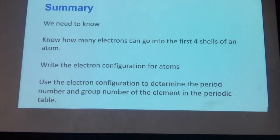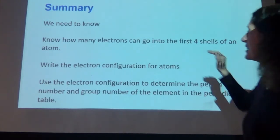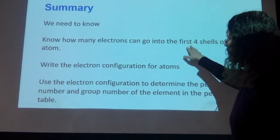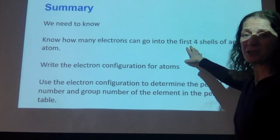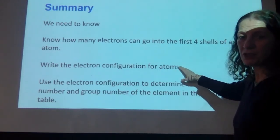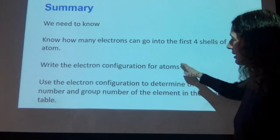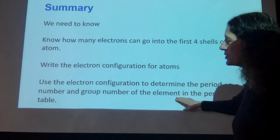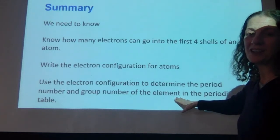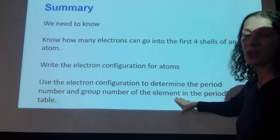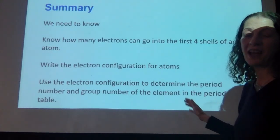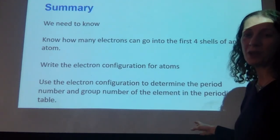So what we're trying to do from today's lesson is to know the rules for how electrons go into the first four shells, write the electron configurations for atoms, and then use that electron configuration to determine both the group number and the period number. Make notes on the lesson and then have a go at the Google form.